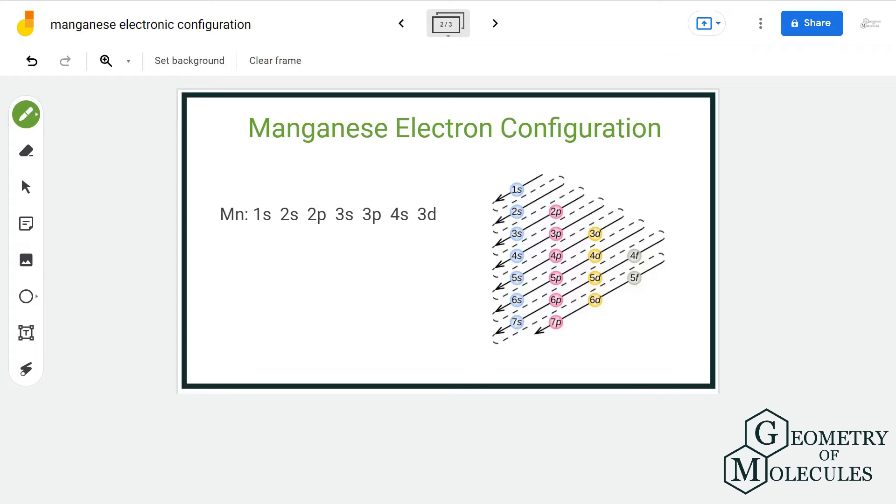The electronic configuration of manganese is 1s2, 2s2, 2p6, 3s2, 3p6, 4s2, 3d5.